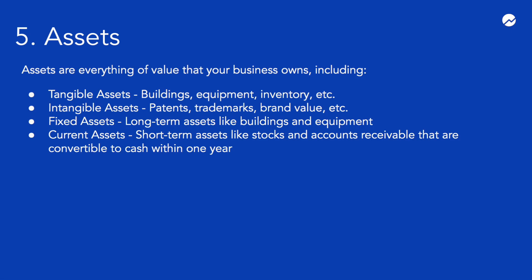Assets, our next business finance term, are everything of value that your business owns. This includes both tangible assets such as a warehouse or equipment that your company owns, as well as intangible assets such as the value of a patent or trademark. Fixed assets are long-term assets like land that aren't likely to be converted to cash anytime soon. Current assets include things like cash, stock, and accounts receivable that are likely to be converted into cash within the year.